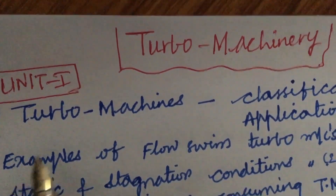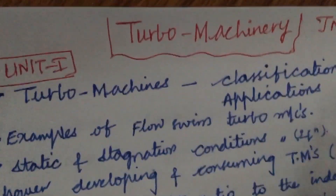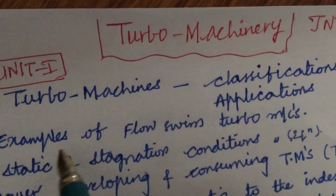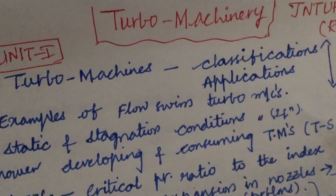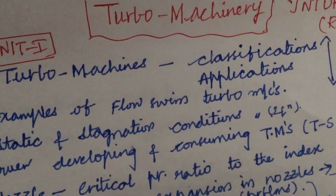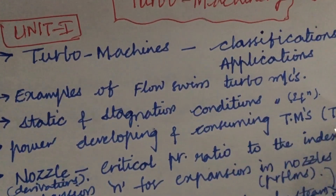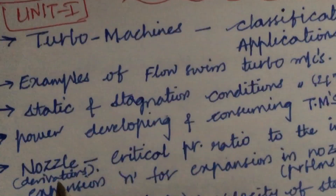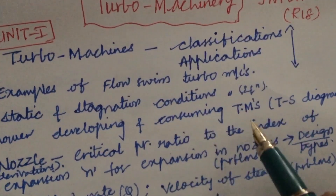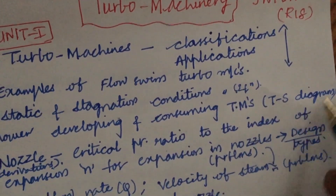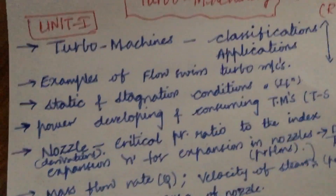Unit 1 is all about Turbo Machines and their classifications, applications, as well as examples of flow-type Turbo Machines. From these concepts we can expect one question related to 1A. The static and stagnation conditions, equations, power development and consumption of Turbo Machines, as well as the TS diagram, are very important gunshot questions, dear students.